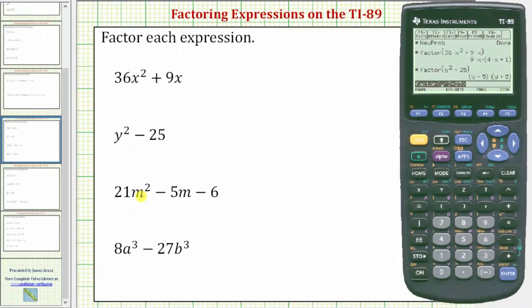Next we want to factor 21m squared minus 5m minus 6. So we'll press F2 and then 2 for factor. And we'll enter 21. To use the variable m, notice how the m is above the 5. We press alpha 5, raise to the power of 2, minus 5, alpha 5 minus 6.